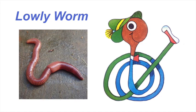This is Lowly Worm from the Busytown Richard Scarry books. The caricature here is really just the coiling and curving of the body, but most of all it's just a fun, risky design that works perfectly because of how silly it is.